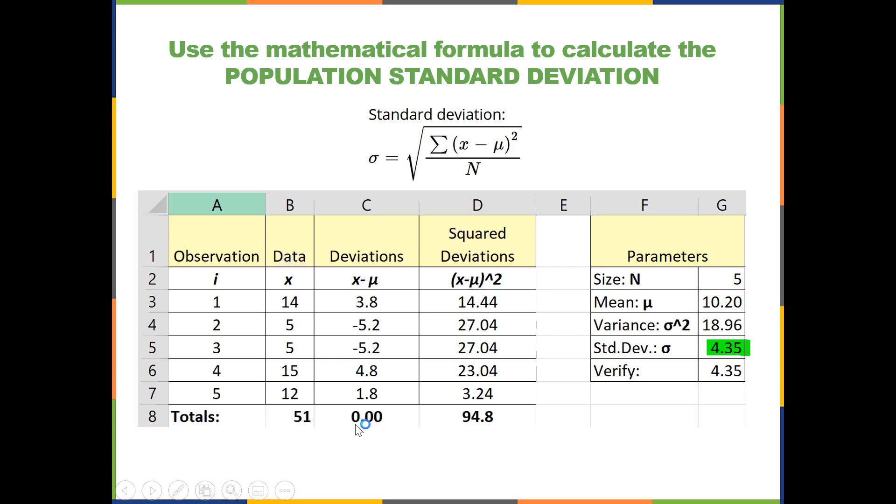So we raise it to the power of two, which makes everything positive. Each deviation squared, then added. Now we have a meaningful sum that helps us understand the amount of variation in the sample. Dividing that by the population size gives us the average squared deviation, which is our variance.